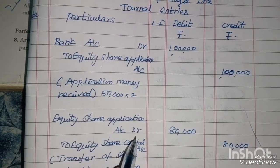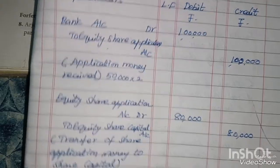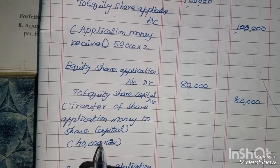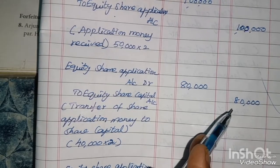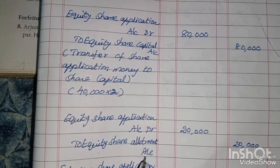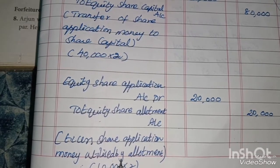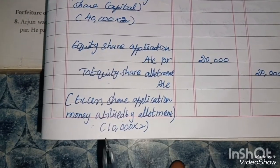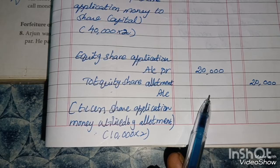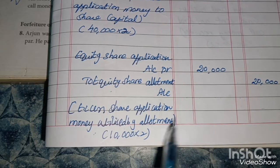Second entry: Equity share application account debit to equity share capital account, and transfer of share application money to equity share allotment account. Excess share application money of Rs.20,000 — that is 10,000 into Rs.2 — is utilized by allotment and adjusted against equity share allotment.